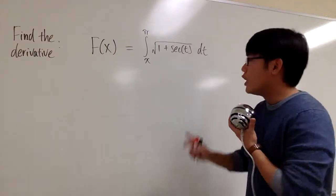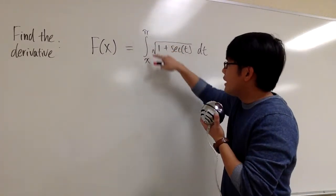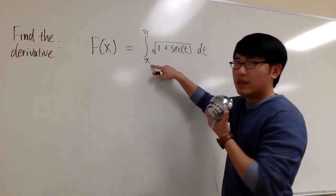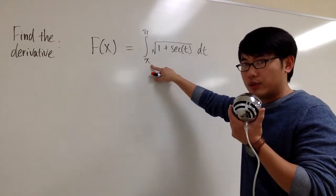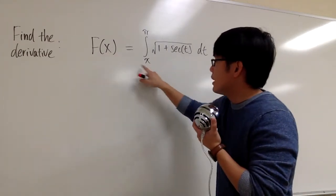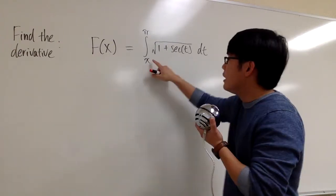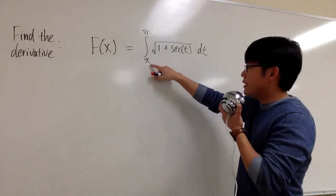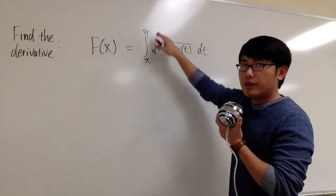However, before we can use that, we should make sure that - look at the limit of integration. Let's look at the variables that we're using, which is x, right, because here we have f of x. And we should have the expression that's in terms of x on the top, rather than on the bottom.